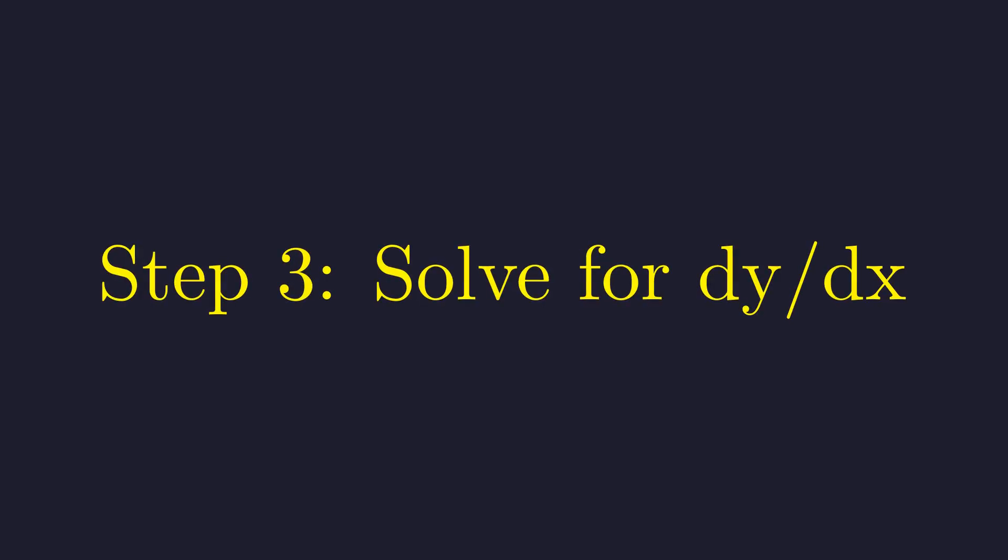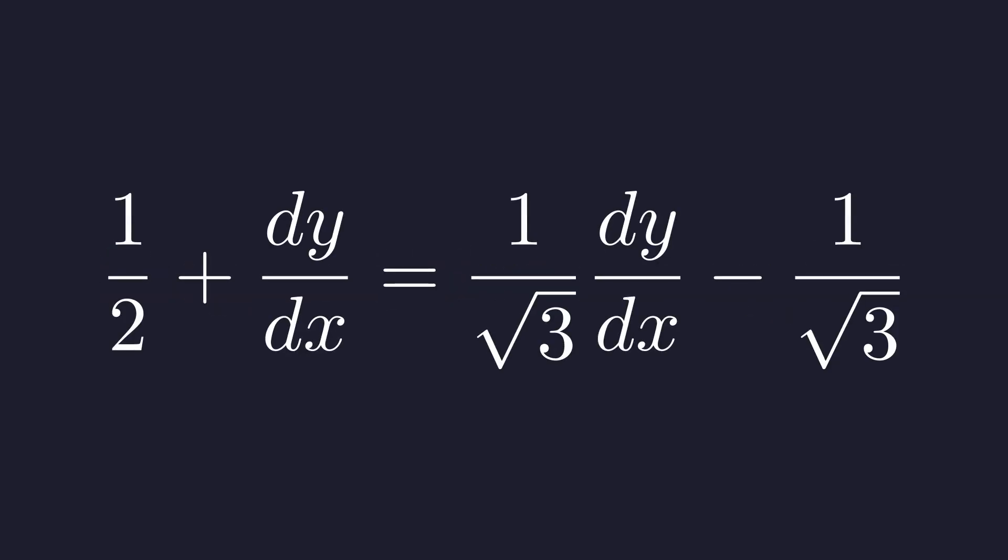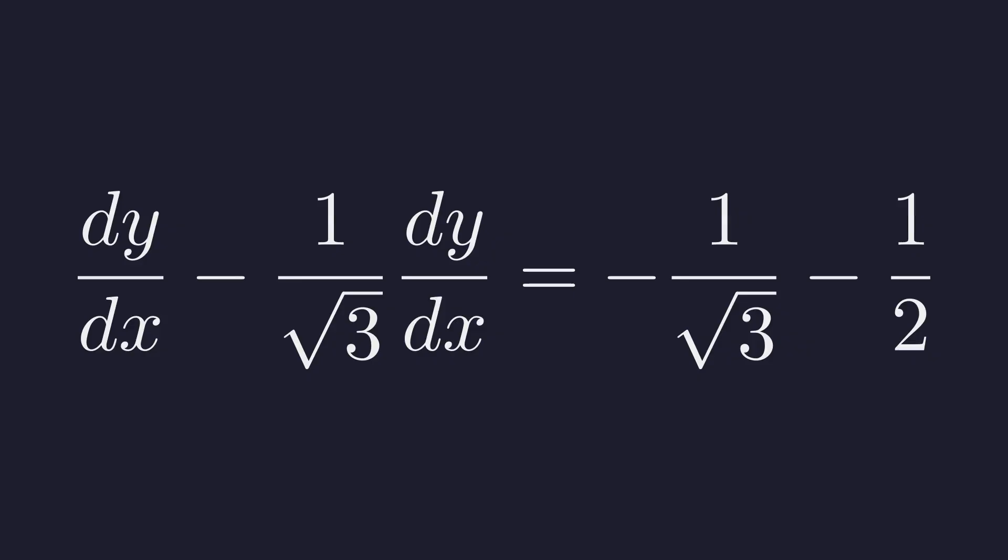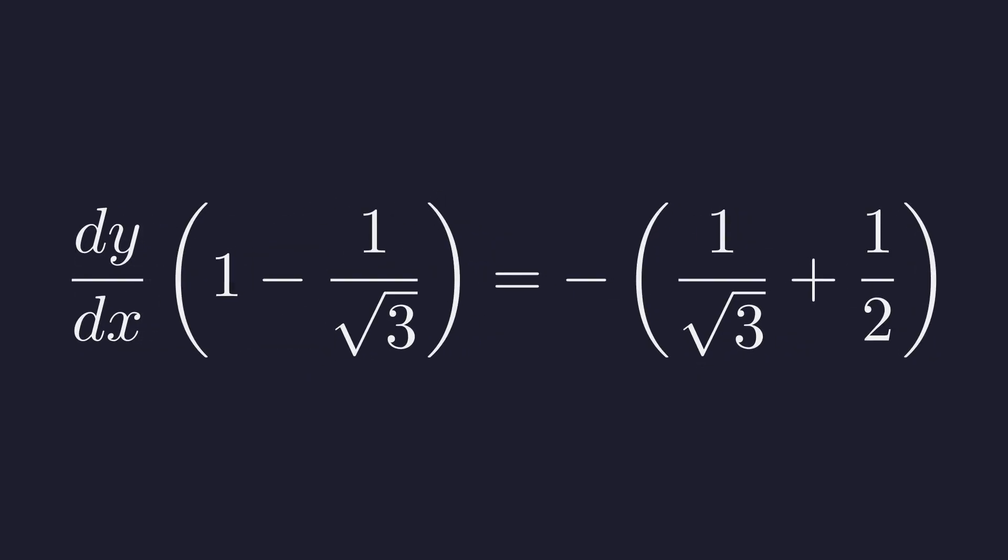Now we just need to do the final algebra to isolate dy over dx. First, distribute on the right side. Then, gather all terms with dy over dx on the left and all constant terms on the right. Next, factor out dy over dx on the left side. Now find common denominators inside each parenthesis.